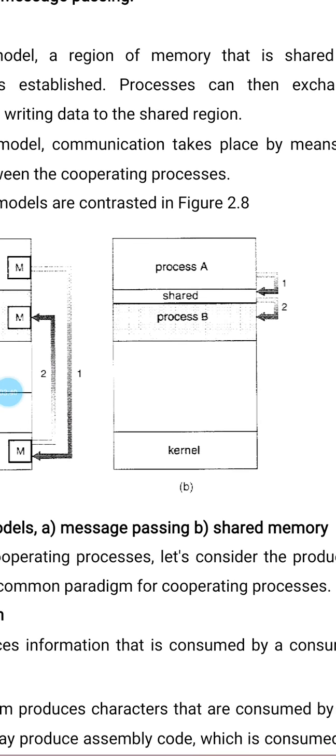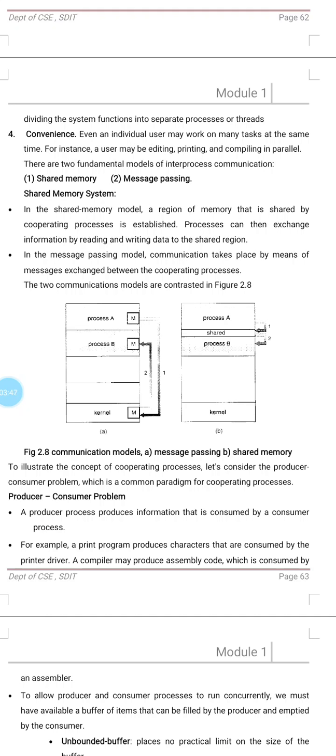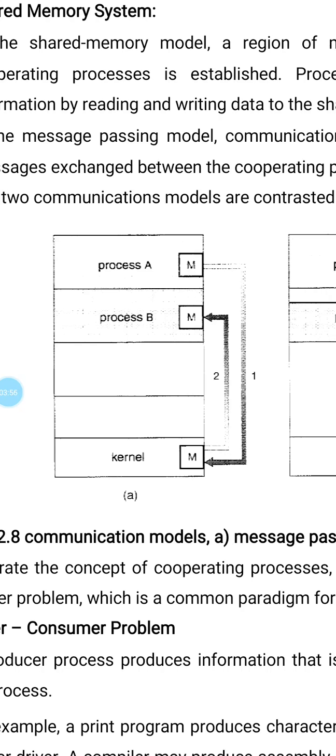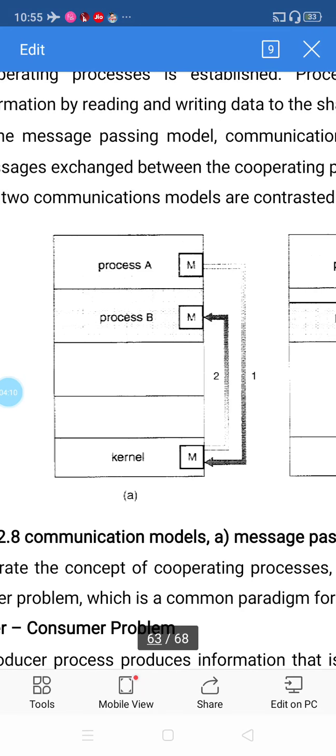The next model is message passing. In this case, communication takes place by means of message exchange between cooperating processes. As you can see in the diagram, there is process A and process B but no shared region. Process A sends a message which is stored in the kernel, and that message is then read by process B. This is an important question — draw the diagram and explain the shared memory model and message passing model.